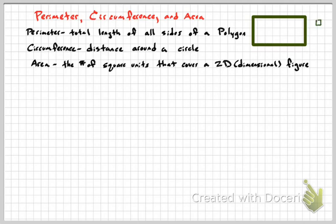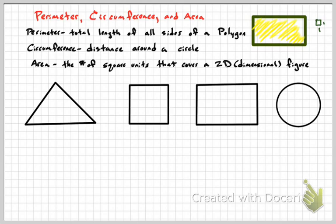Think of area as how many tiny one-by-one unit squares fit inside a figure. Those are the four shapes we'll examine: square, triangle, rectangle, and circle. We'll go over the formulas for finding perimeter, area, and circumference for each.